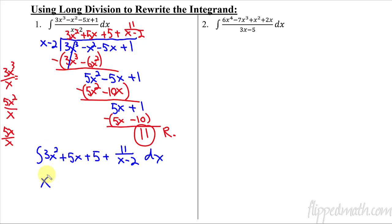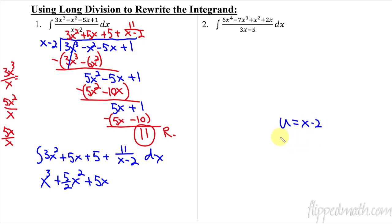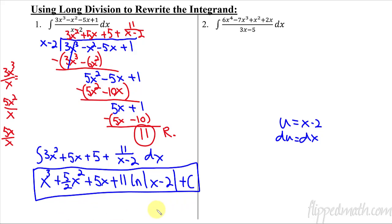Take the antiderivative of each part. We get x³ plus (5/2)x² plus 5x. For the remainder fraction, let u equal x minus 2, so du equals dx. Then 11 over (x minus 2) becomes 11 over u, and the antiderivative is plus 11 times the natural log of the absolute value of u — that is, ln|x minus 2| — plus C. That last part uses the pattern where 1 over u integrates to a natural log.